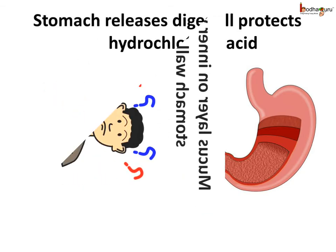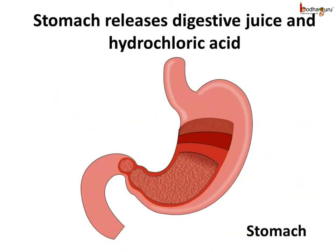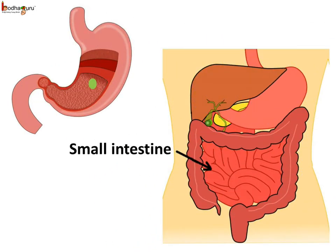The inner walls also secrete digestive juice, which helps in the digestion of protein and fat. However, the food doesn't get completely digested in the stomach. The partially digested food from the stomach moves into the small intestine, and this partially digested food is called chyme.